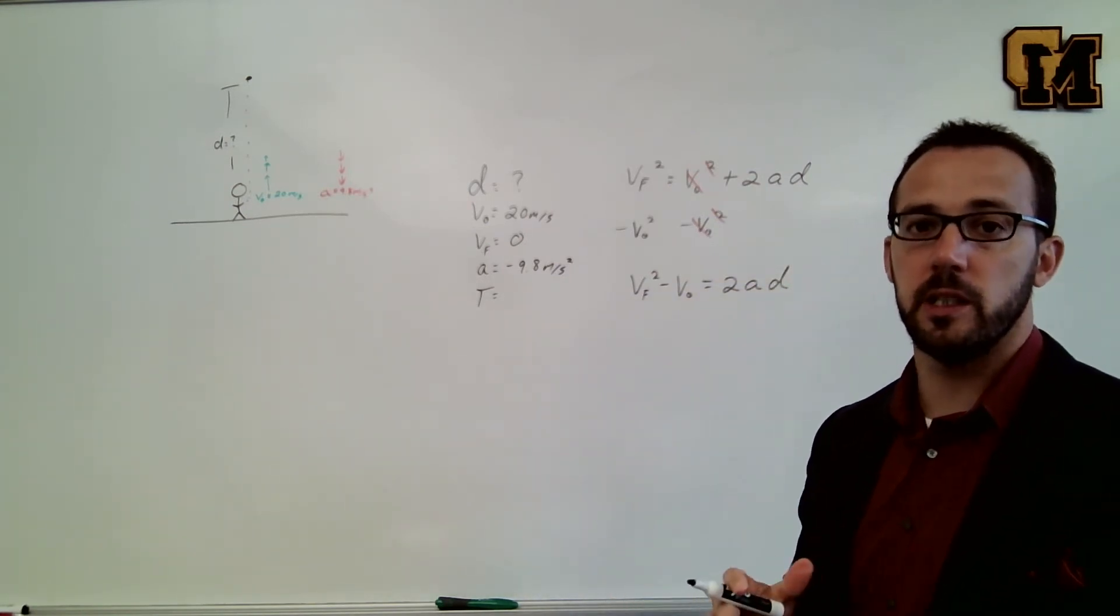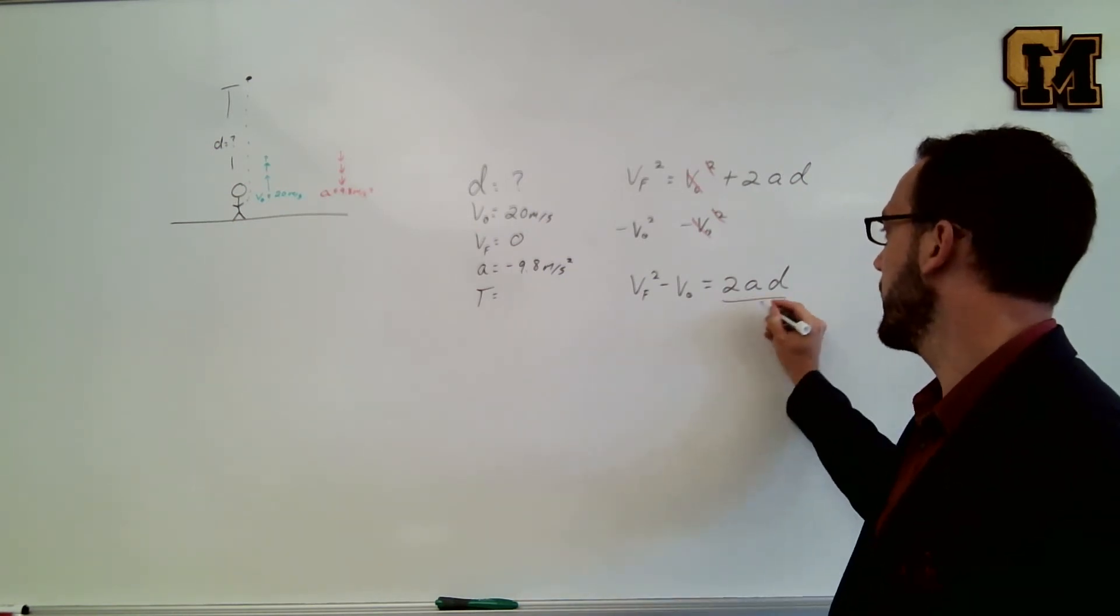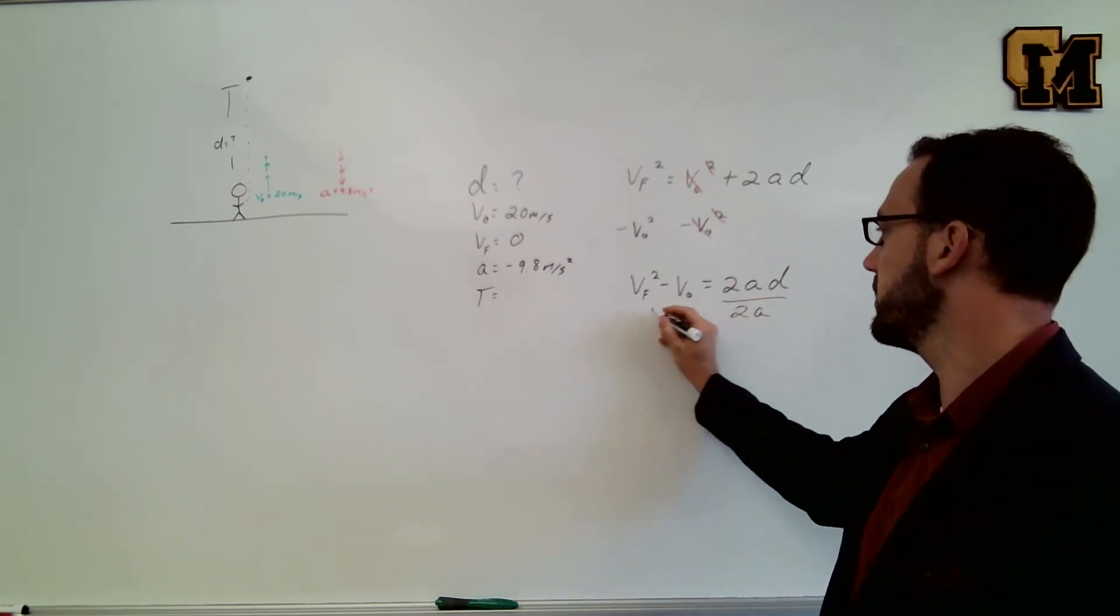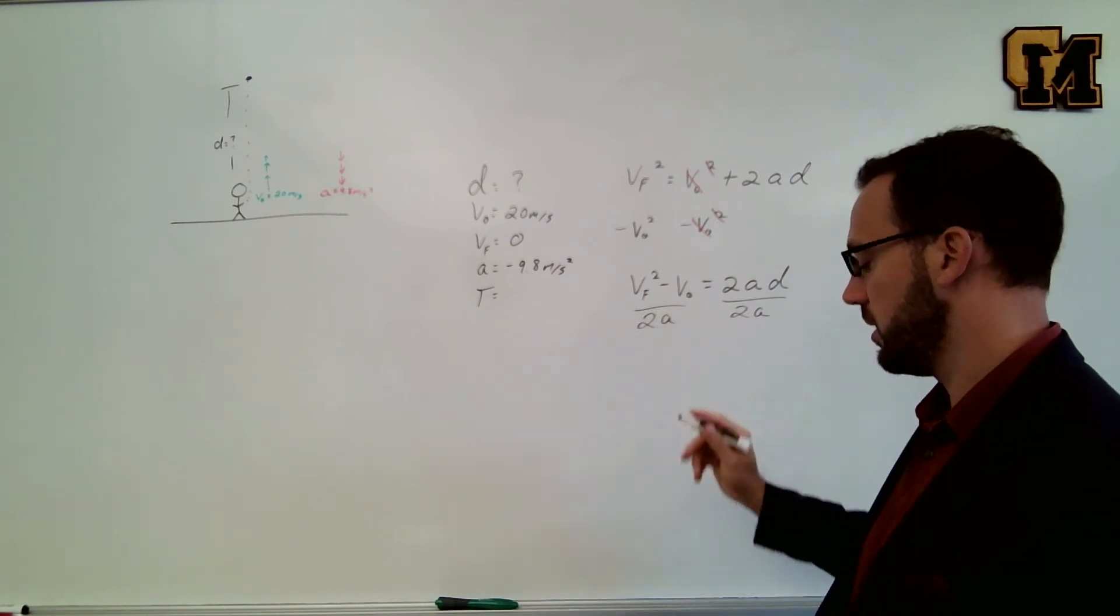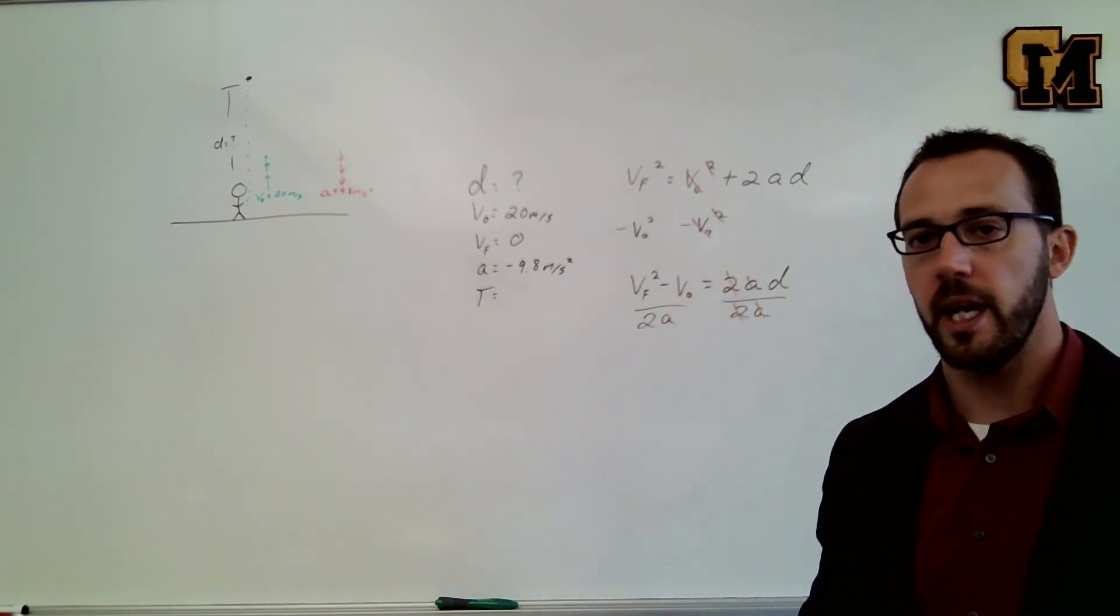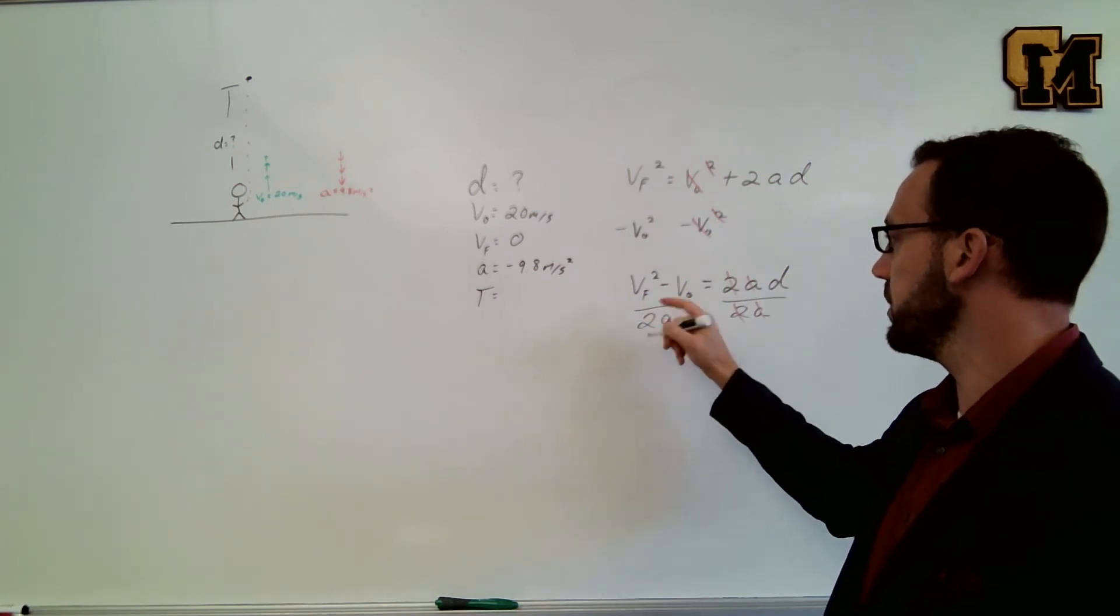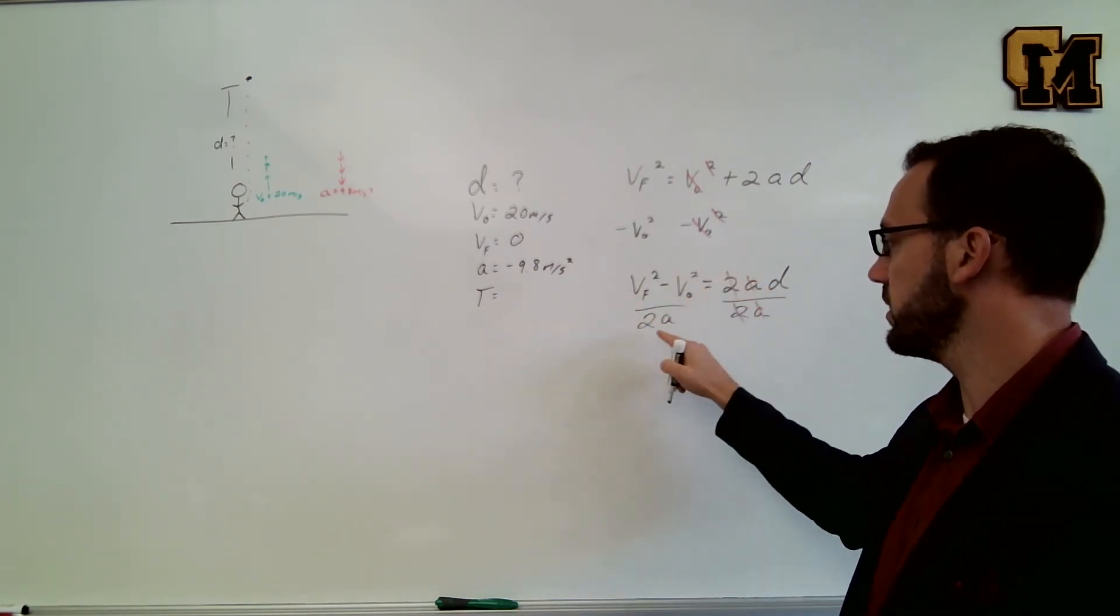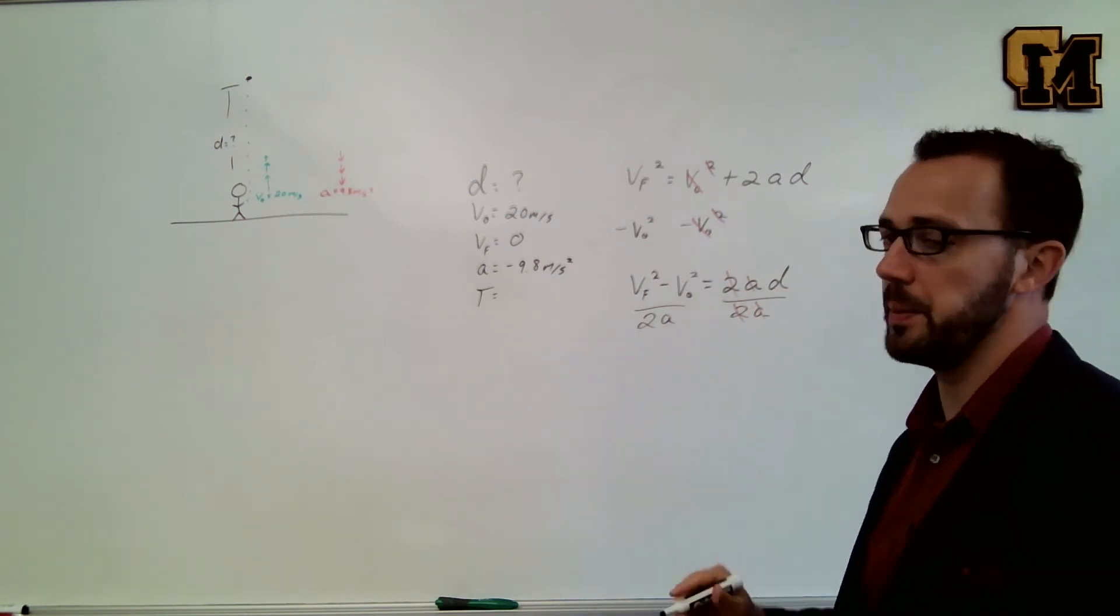Now I can do the division to get 2A out of my equation on the right side, divide by 2A on both sides. The 2 and the A cancel on the right and that leaves me with VF squared minus V naught squared divided by 2A equals D.